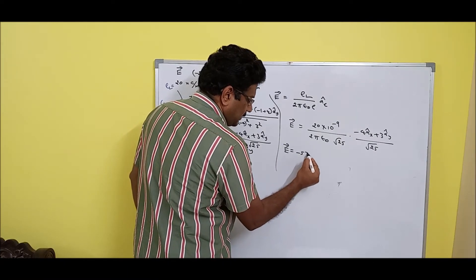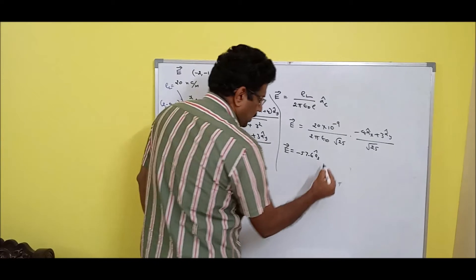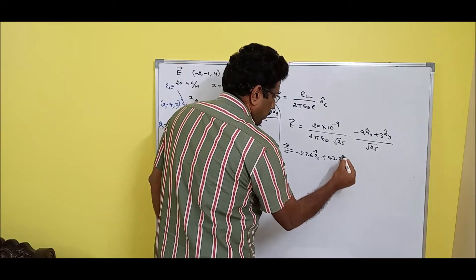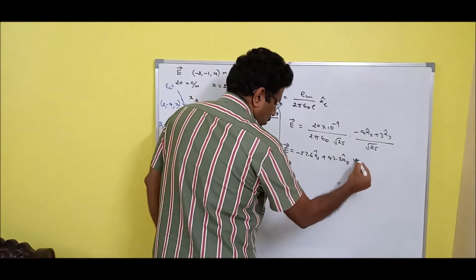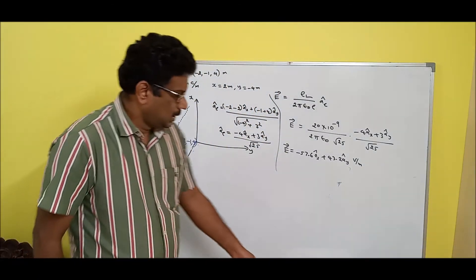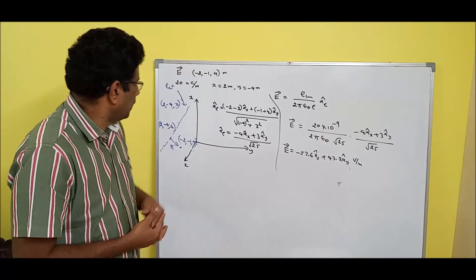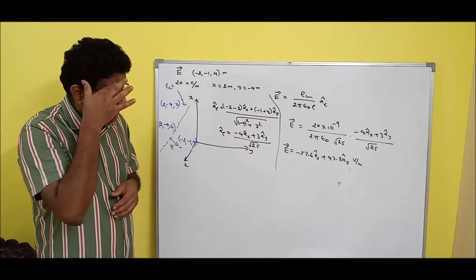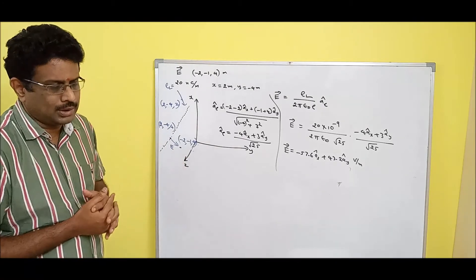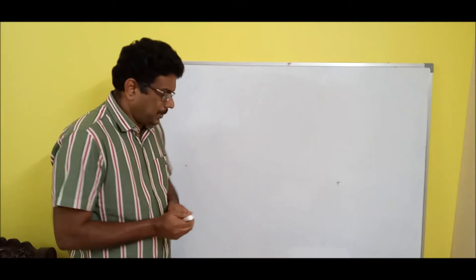Do the full calculation, then multiply by -4 and by 3 respectively. The result is: E = -57.6 A_x_cap + 43.2 A_y_cap volts per meter. Make a note of that. The previous problem had the line along an axis; this one had the line parallel to an axis — that is the key difference.